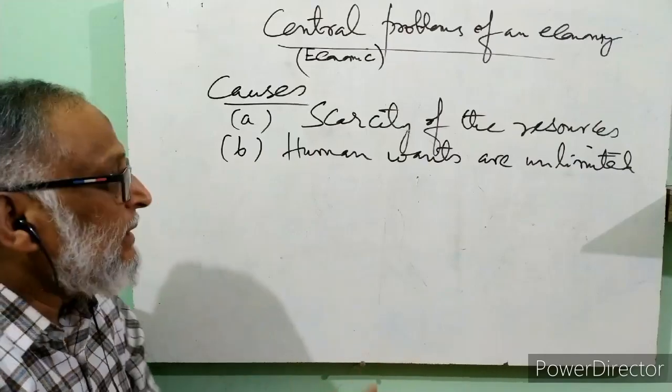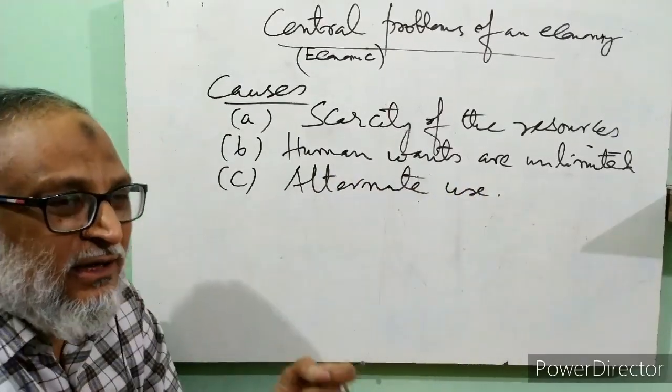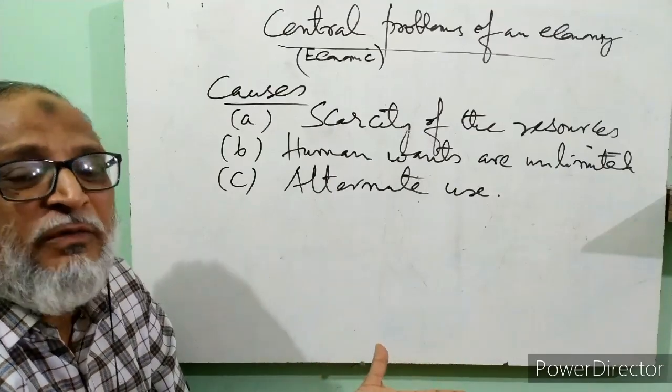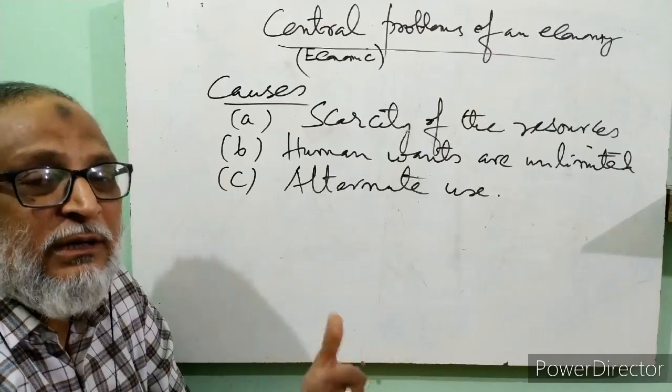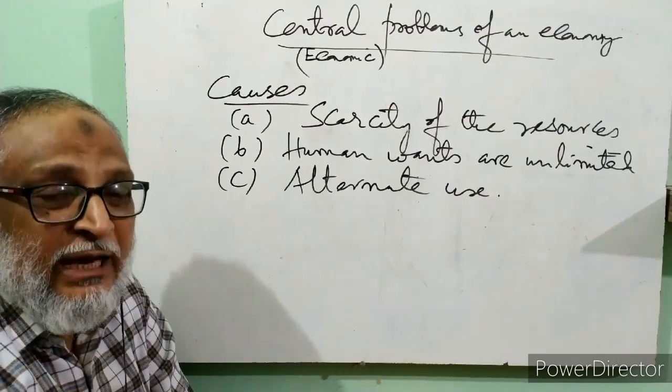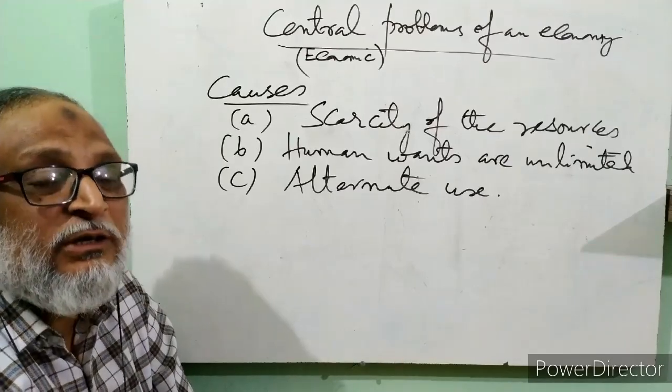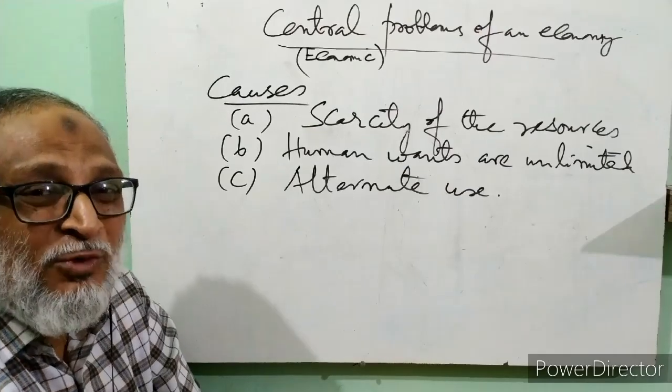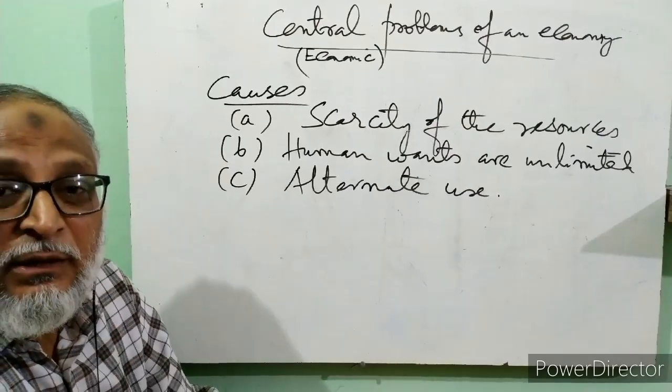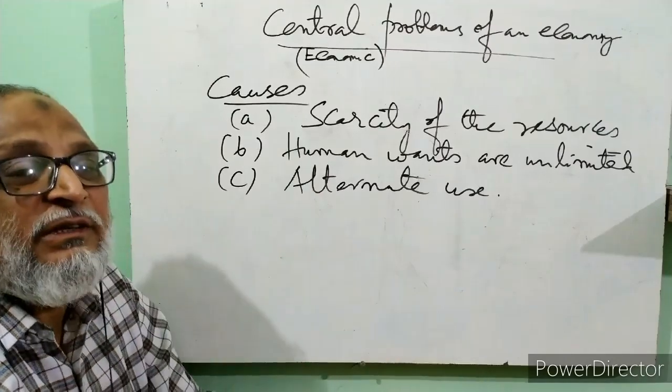The third cause is alternate use, meaning multiple uses of a thing. If things didn't have alternate uses, we might be able to fulfill many needs. For example, water is used for drinking, bathing, cooking, agriculture, and industry. Electricity is used domestically, in agriculture to run tube wells, in industries to run machines, and in transport to run railways. Most things have alternative uses, which increases their scarcity.